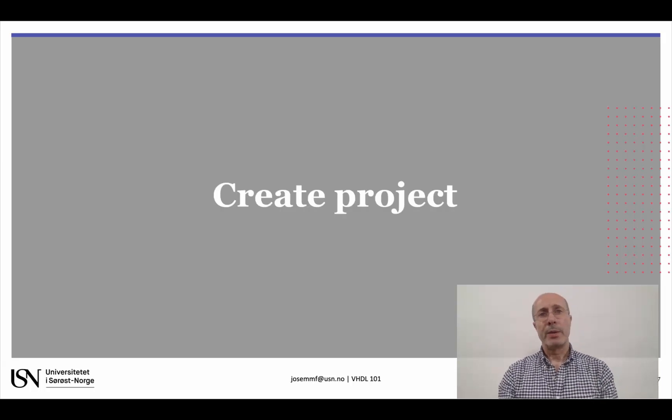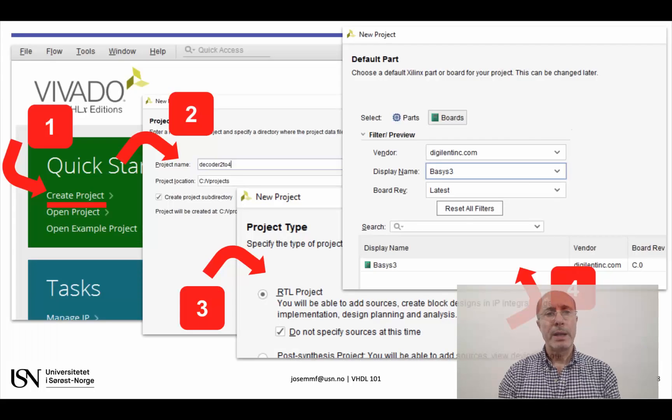I assume that VIVADO is already running and that you have previously installed the Basys-3 board files, so we can start by creating a new project. Click on Create Project on the left and choose a meaningful and preferably short name starting with a letter. Notice that I've already created a directory called VProjects at the root of my disk where my project folders are stored. Keep the Create Project Sub-Directory option active as shown here.